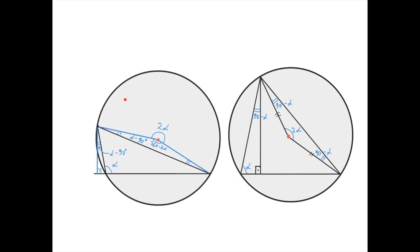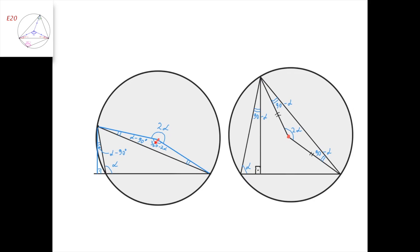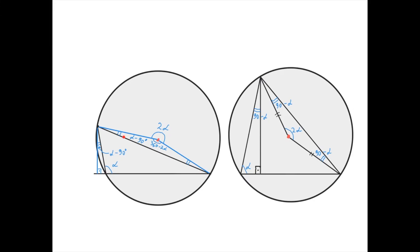Here's how the same statement looks for alpha greater than 90 degrees. In this case, this is our triangle, this is the altitude, and this is the segment connecting this vertex and the circumcenter of the triangle. Then we need to prove that this angle equals this angle, in which case this altitude and this line would be isogonal conjugate lines with respect to this vertex of the triangle.